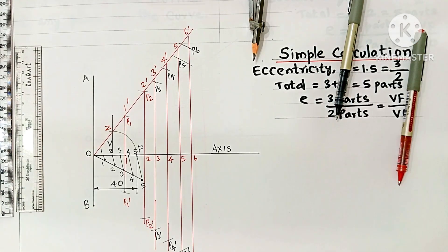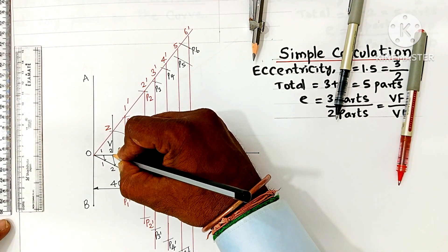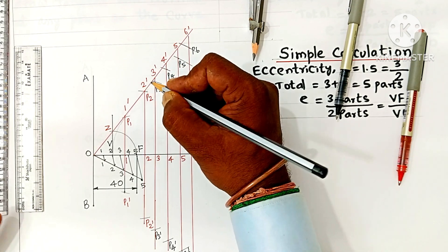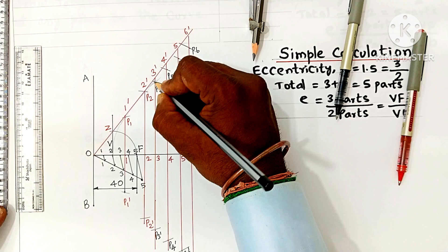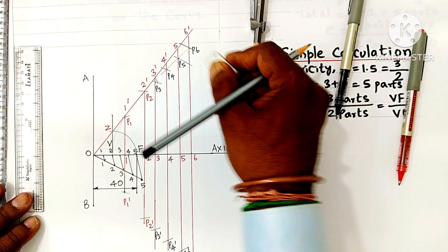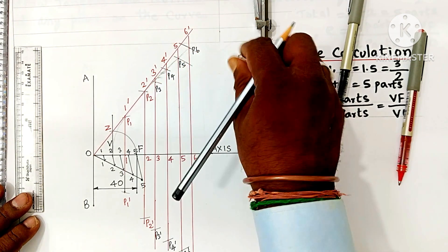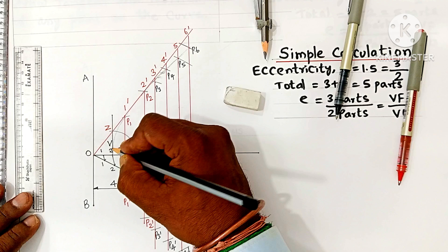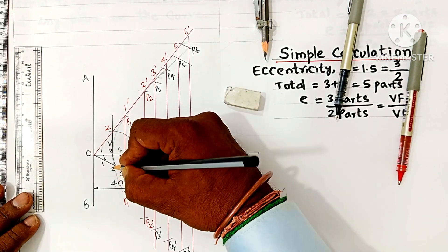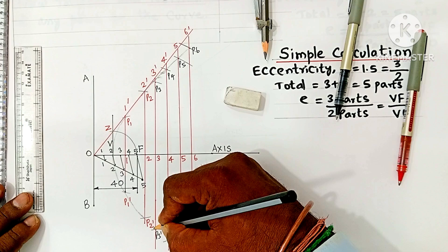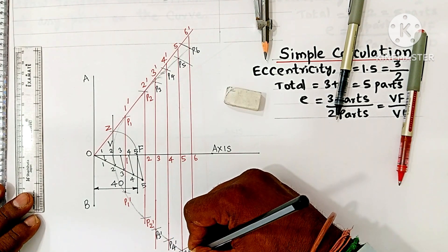Draw a smooth curve passing through the obtained points, starting from V through P1, P2, and so on. First draw lightly, then darken later. If the curve goes wrong, erase that segment and correct it — do not paint the curve. Below the axis, join V with P1 dash and continue. The curve should diverge outward; your hand should bend accordingly. Do not turn your drawing sheet or drawing board.